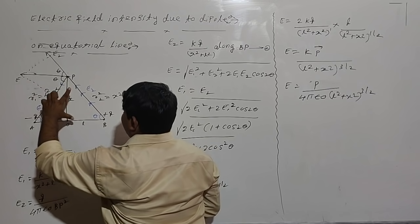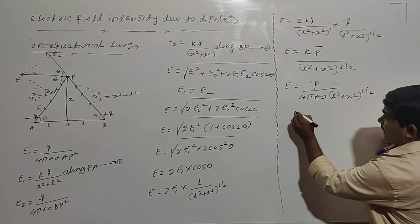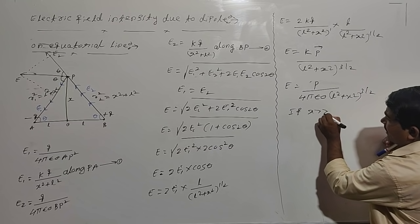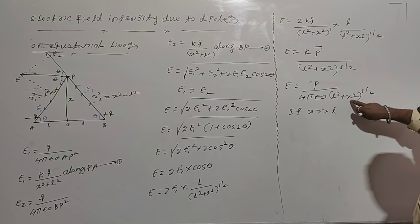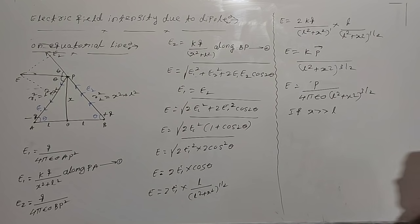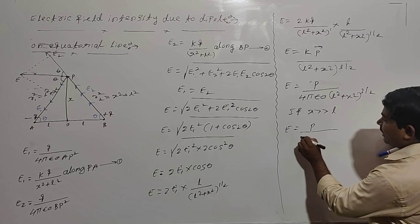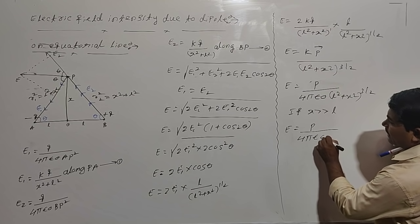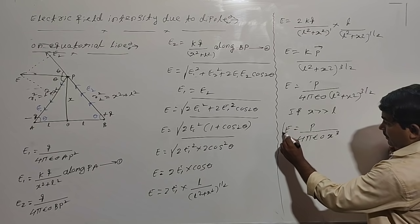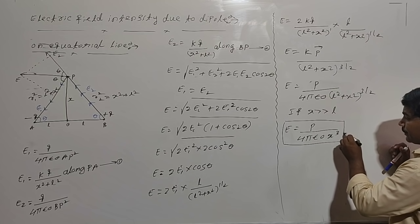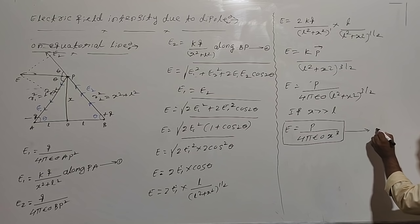If L is very very smaller than x — that is, x is very very greater than L — then in the term (L squared plus x squared) raised to 3/2, the L term can be neglected. So the result becomes: E equals P divided by (4πε₀·x cubed). This is the electric field intensity due to a dipole on the equatorial line.